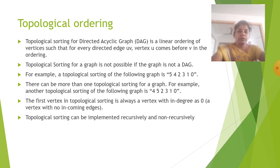For example, a topological sorting for the following graph is 5, 4, 2, 3, 1, 0.